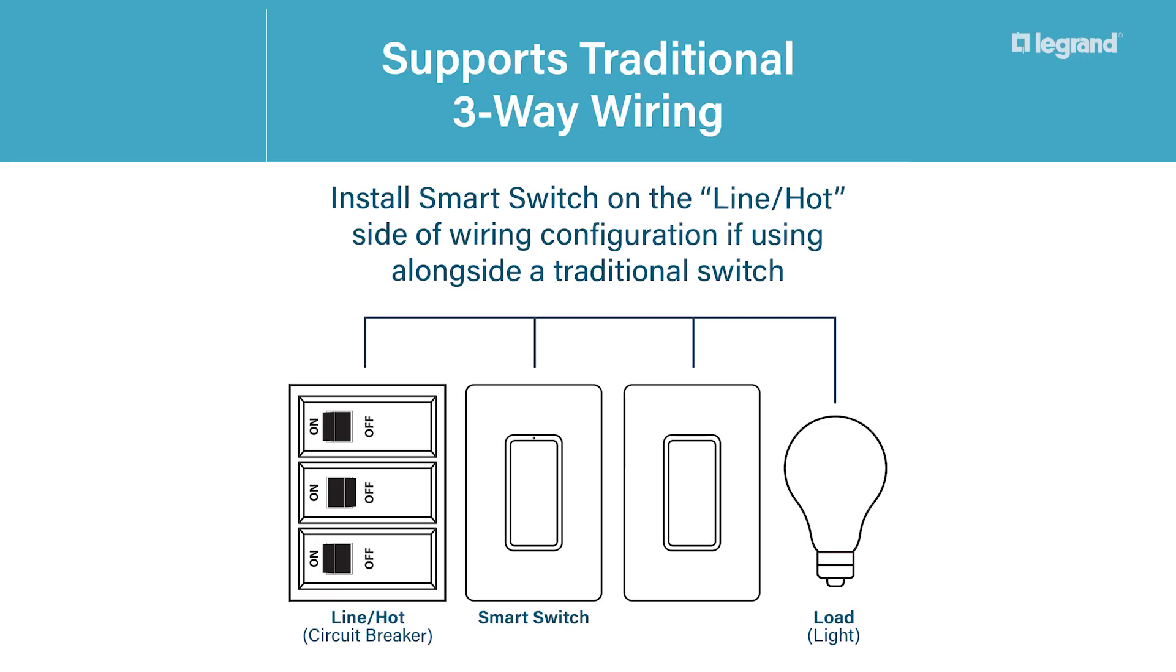If controlling the light from two different locations, also known as a three-way installation, the switch must be installed on the line hot side. To wire for three-way, connect the two remaining traveler wires to load terminal and traveler terminal. It does not matter which traveler wire goes to which load terminal.